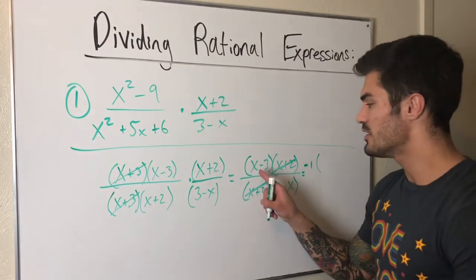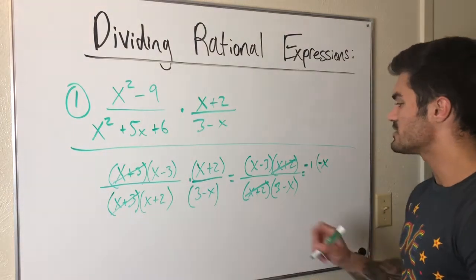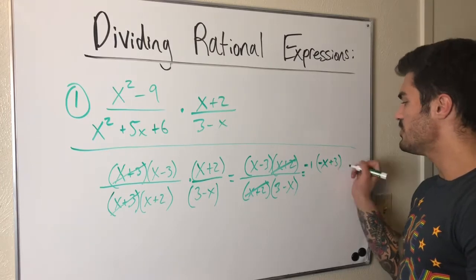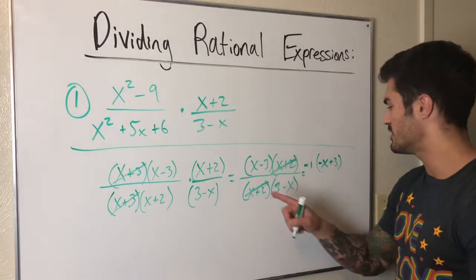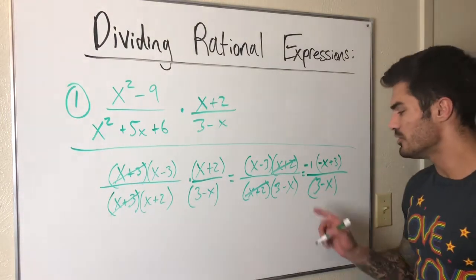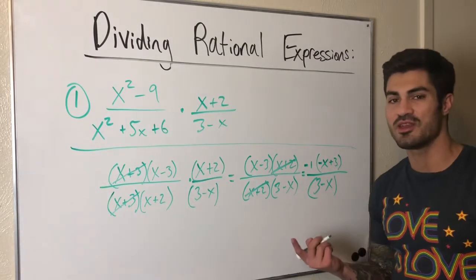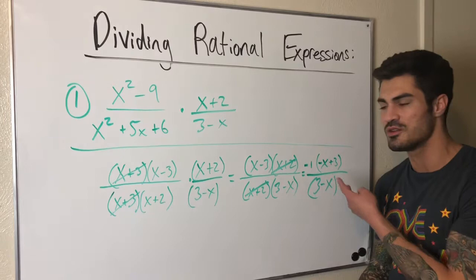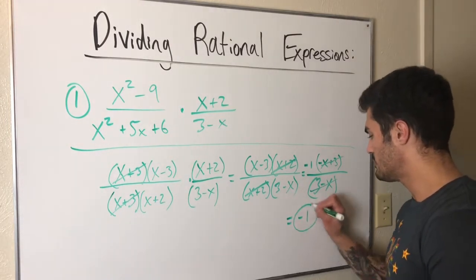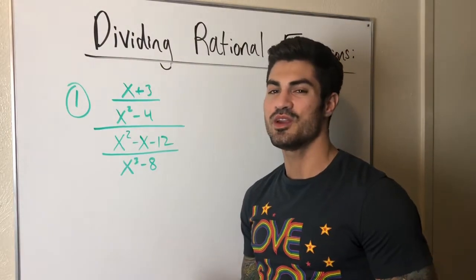I'll factor out a negative 1 from the top. So (x-3) becomes -1 times (-x+3), which is -1 times (3-x). That (3-x) on top and (3-x) on the bottom cancel, and we're left with negative 1. So that's our first example — the answer is -1.